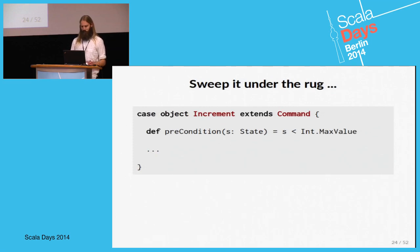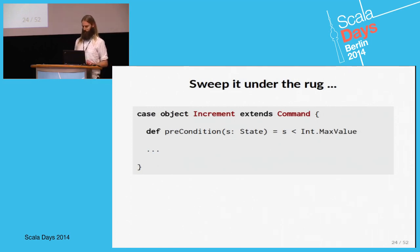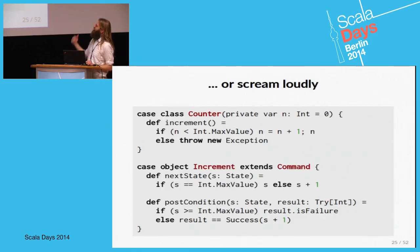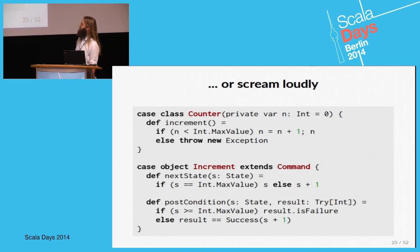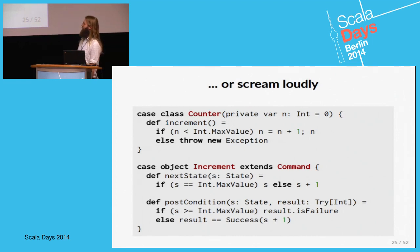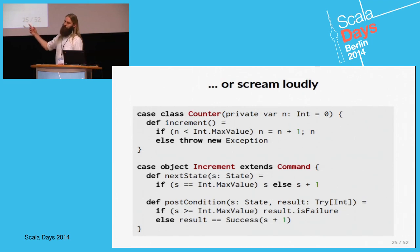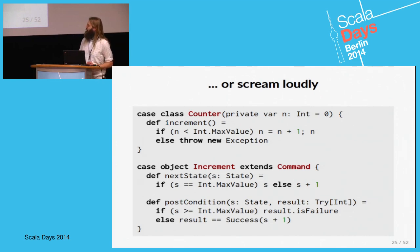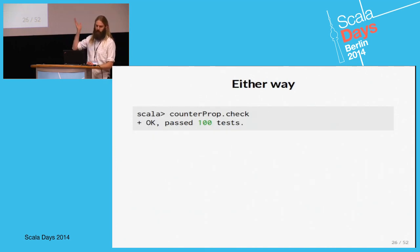How do we solve it? We can either add a precondition — you are not allowed to run the increment command if the current state is at the max value — or we can choose to throw an exception. In that case, we change the implementation to throw an exception, and change the specification too: the nextState method won't update the state if the max is reached, and the post-condition expects a failure. Both solutions fix the problem.